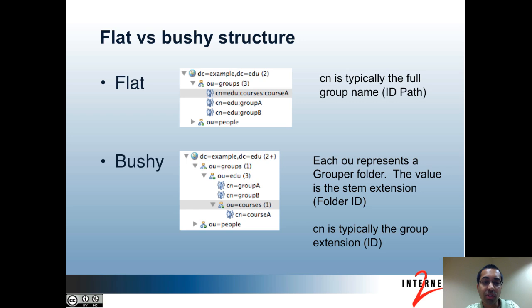Here are two example structures for how groups may look in your LDAP. The first one is flat, where all groups are directly under one OU. In this case, the CN attribute, which is used as the RDN, contains the full Grouper group name or ID path. The second example is the bushy structure, where each OU within OU=groups represents a folder in Grouper. The value of the OU is the folder ID in Grouper, and group objects within OUs are similar to how groups are within folders in Grouper. Typically the CN would be the group extension or ID. If you're not clear on which structure is used at your institution, you should ask your Grouper administrator.